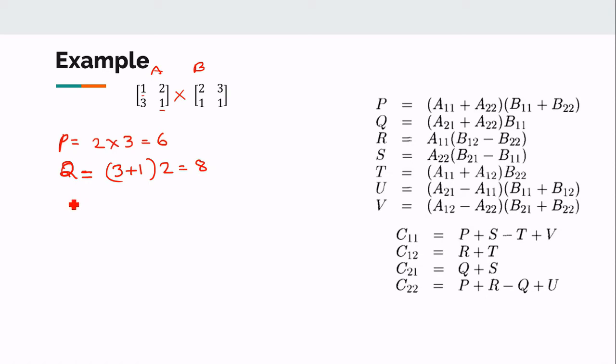And then R is equal to A11. A11 is 1. And B12, B12 is 3, minus B22. B22 is 1. 3 minus 1 is 2.